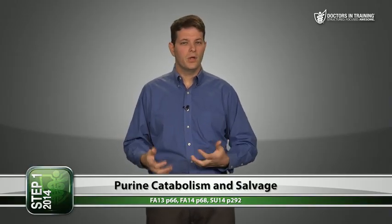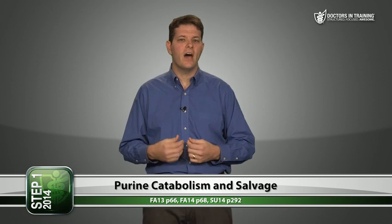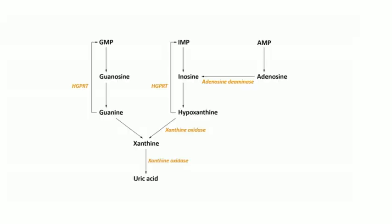With purines, you don't always have to make them from scratch — you can salvage them. When you break down nucleosides like GTP, you strip off phosphate groups from GTP to GDP to GMP to guanosine, then strip the ribose to get guanine. The ultimate end product of purine breakdown is uric acid. The precursor of uric acid is xanthine, and xanthine oxidase catalyzes the conversion of xanthine to uric acid.